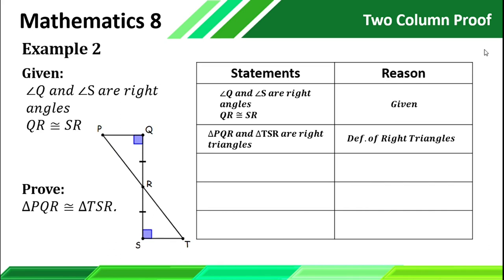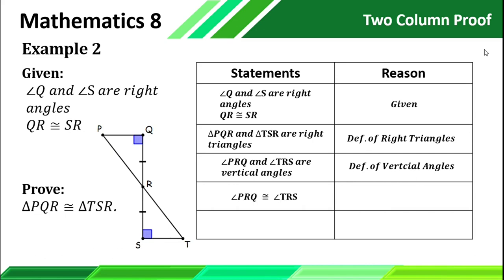Looking at our figure, we can see that we have vertical angles — those are angle PRQ and angle TRS — by the definition of vertical angles. And since they are vertical, they are automatically congruent angles. So angle PRQ is congruent to angle TRS using the vertical angle theorem. Using our figure, we can see that we have a leg and an acute angle, so these two triangles are congruent by the LA theorem.